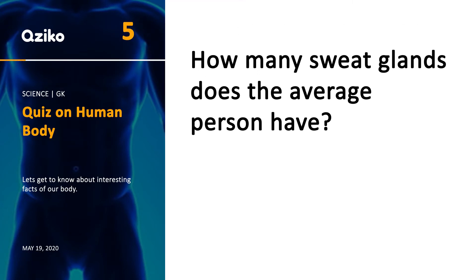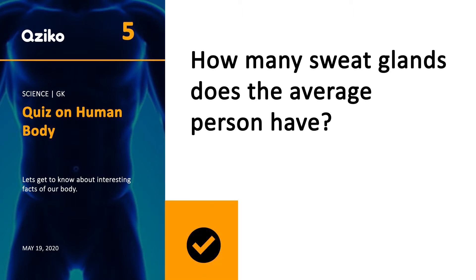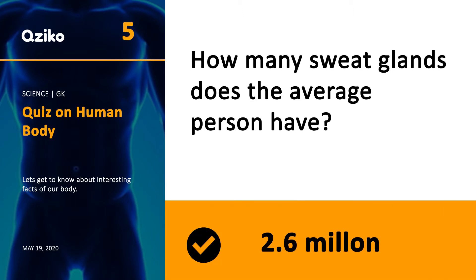How many sweat glands does the average person have? Right answer is 2.6 million.